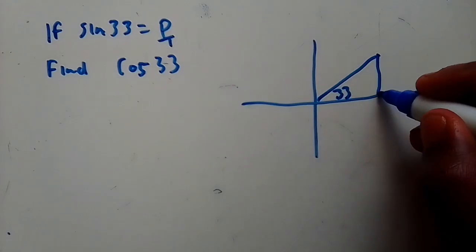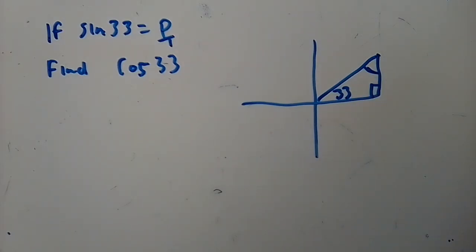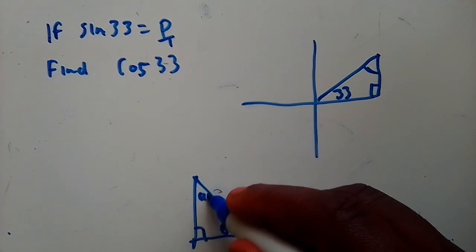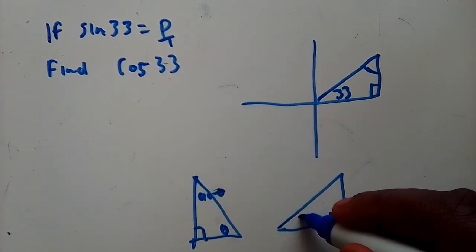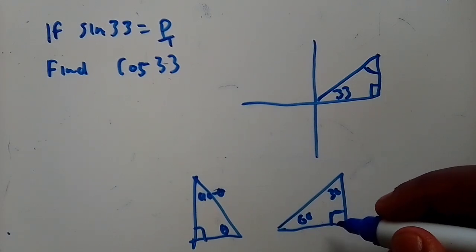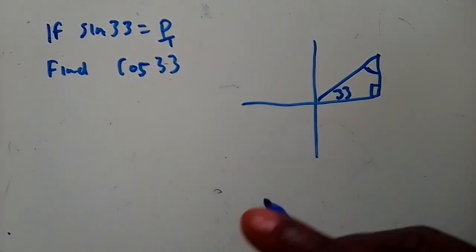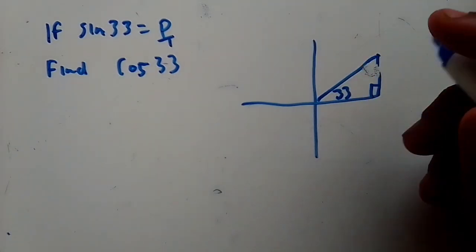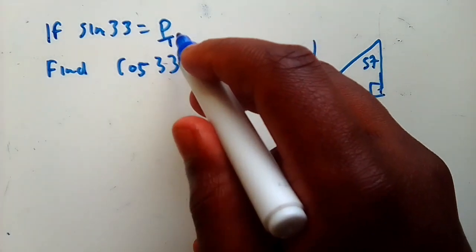A common thing that a lot of students don't do is put the other angle in the triangle. Make sure you also put this angle — not putting it causes some people to get stuck. If we have a triangle and this angle is theta, the other non-right angle has to be 90° minus theta, because they all add up to 180°. So since this angle is 33°, the other must be 90° - 33° = 57°.